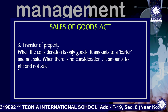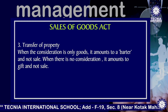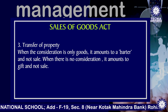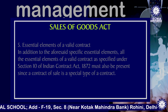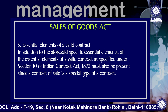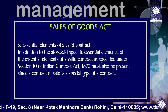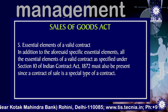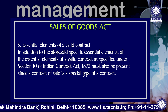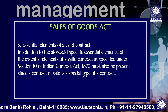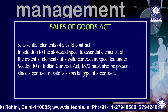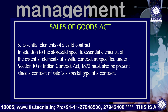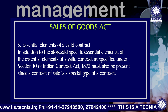When the consideration is only goods, it amounts to a barter and not a sale. When there is no consideration, it amounts to a gift and not a sale. Number 5, the essential elements of a valid contract. In addition to the aforesaid special essential elements, all the essential elements of a valid contract as specified under section 10 of the Indian Contract Act 1872 must also be present, since a contract of sale is a special type of contract.